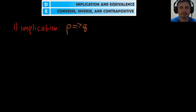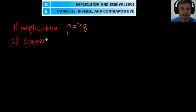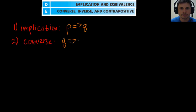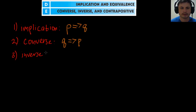Before that, let me explain the other terms. Number two is converse — if Q then P — which is kind of like the opposite of implication. Then you might ask, what's inverse? Because inverse usually means the opposite. Inverse is actually: if not P then not Q.